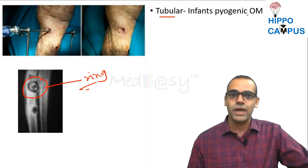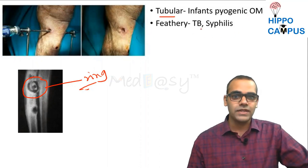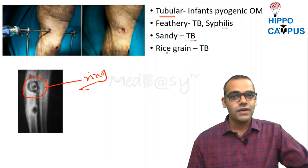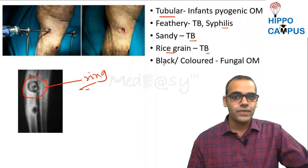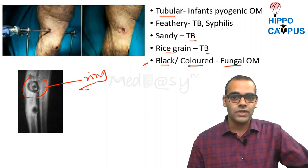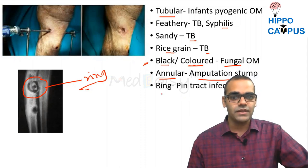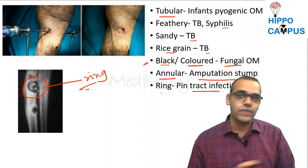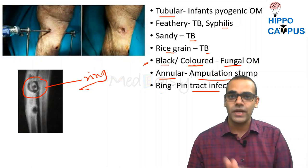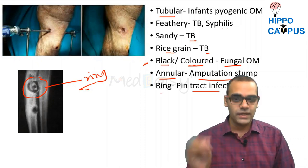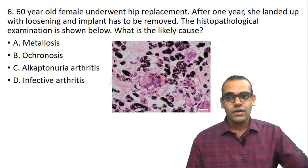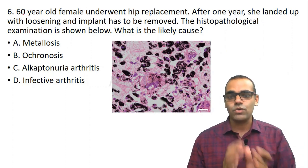There are various other types of sequestrum: tubular sequestrum is seen in infants with pyogenic osteomyelitis; feathery type is seen in tuberculosis and syphilis; sandy type and rice grain type are seen in tuberculosis; black or colored sequestrum is seen in fungal osteomyelitis; annular sequestrum is seen in amputation stump; and ring sequestrum is seen in pin tract infection due to skeletal pins.